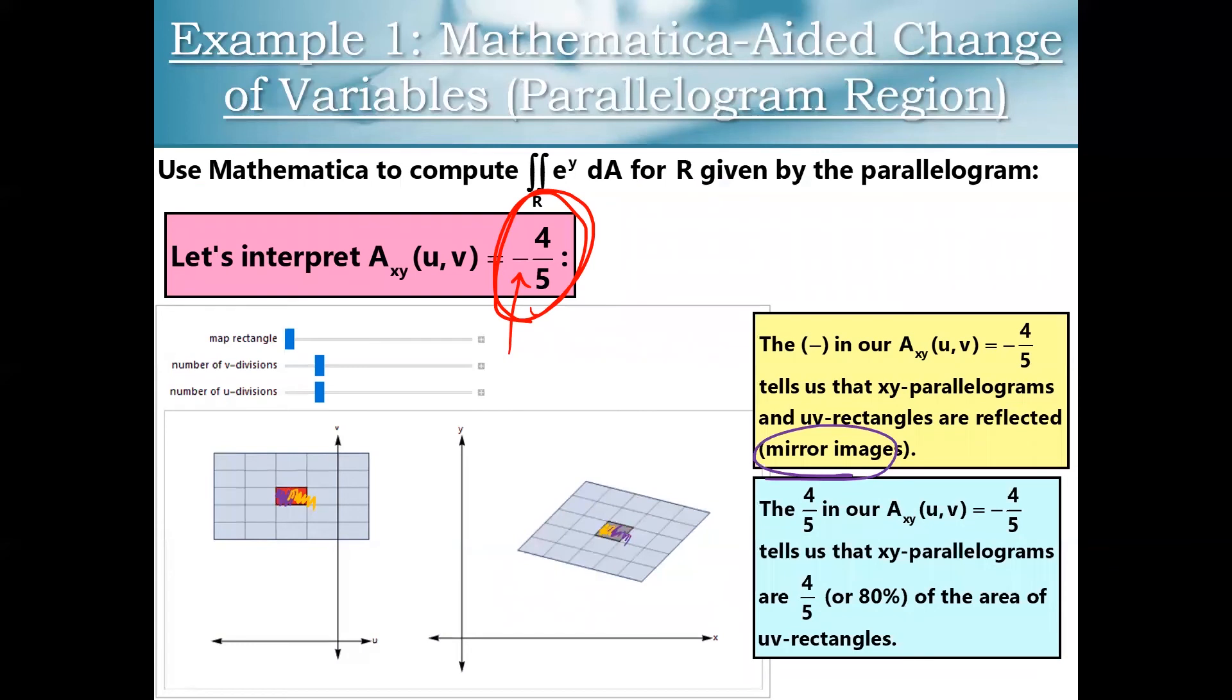The negative sign in our area conversion factor tells us that the region in XY space and UV space are mirror images of each other. There's a reflection happening there. And there is also a meaning to the number four-fifths as well. So now we know what the negative means. What about the four-fifths part of it? The four-fifths tells us that our XY parallelograms are four-fifths of the area of our UV rectangles. It's an adjustment factor that's adjusting for us having different amounts of area in UV space compared to when we map into XY space. And because our area conversion factor here is a constant, we can get a really nice idea of exactly what's happening. Because you can see all of these little parallelograms in our graph paper here, in XY space, look like each individual one looks like it's about 80 percent the size of one of the rectangles in UV space. And that's because that's exactly what's happening here.